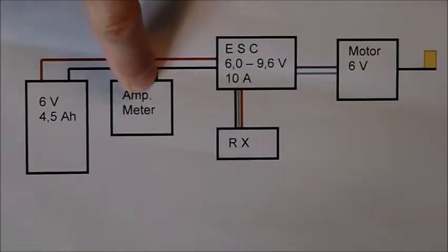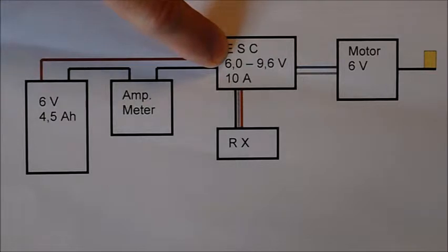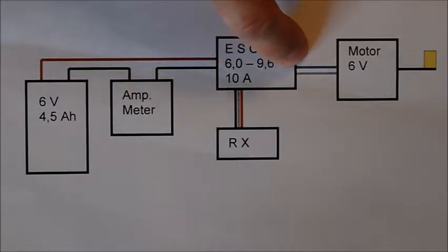From the electric motor the current flows back via the speed controller to the battery. The electronic speed controller has a BEC circuit that powers the receiver and feeds the signal to the speed controller.